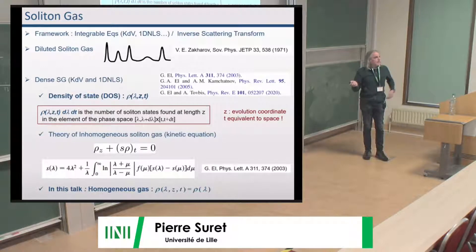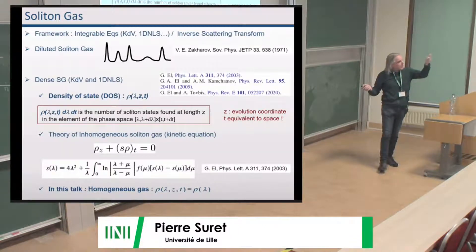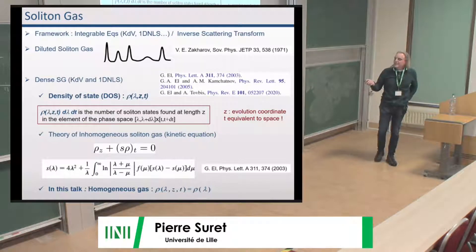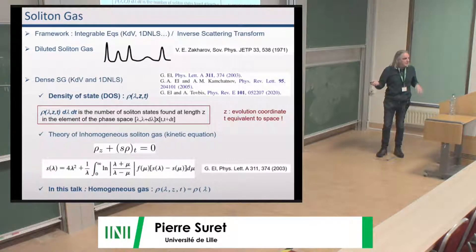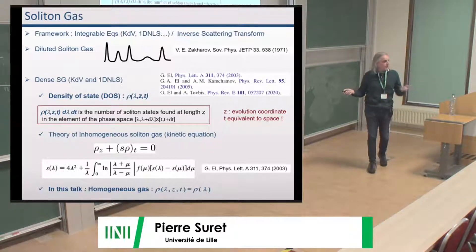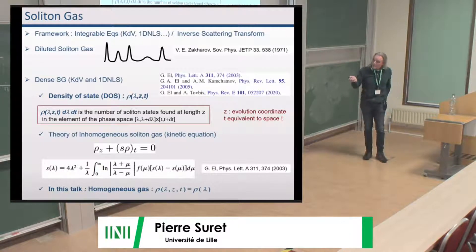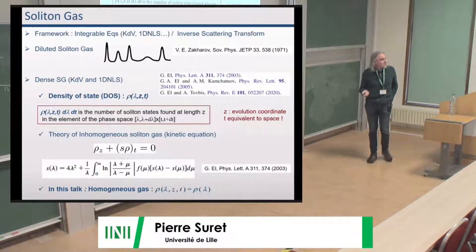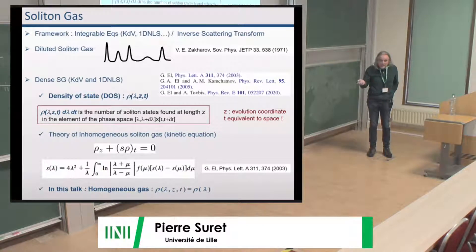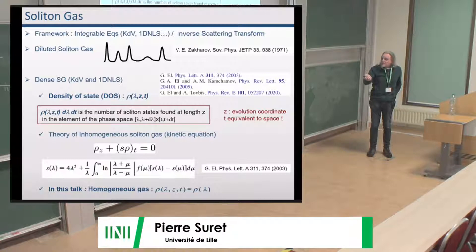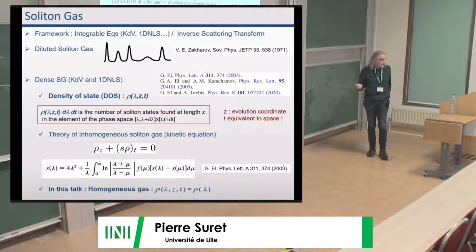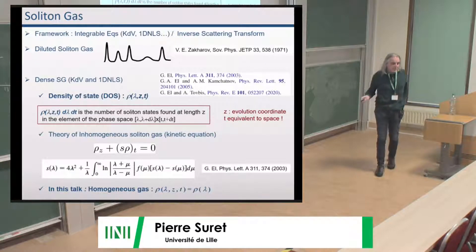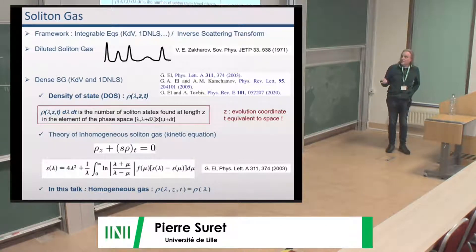You end up with a state equation, which is a continuity equation with a non-trivial velocity. This term corresponds to the space shift I mentioned. What is very interesting is when you have inhomogeneous soliton gas. But I'm going to speak about experiments, and we are at the beginning of experiments in soliton gas, so I'll speak about the simplest case where the density of states does not depend on anything.